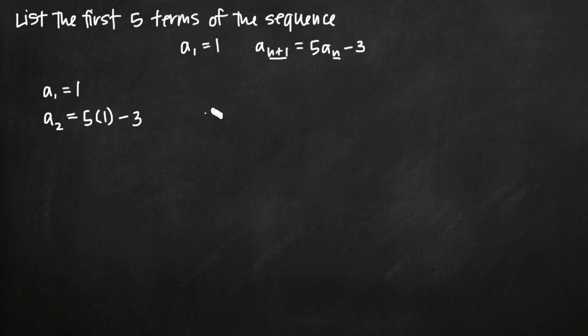So what we get there is a₂ = 2. 5 minus 3 which is 2. So now we have a value for a₂.